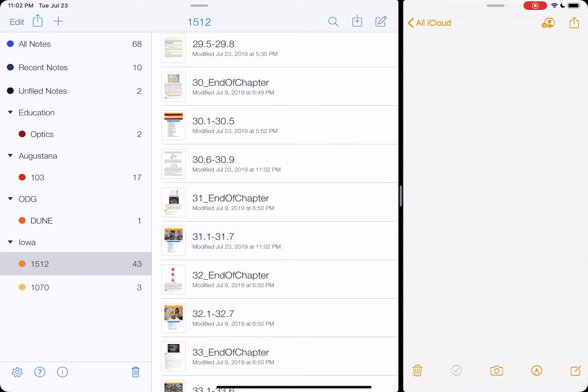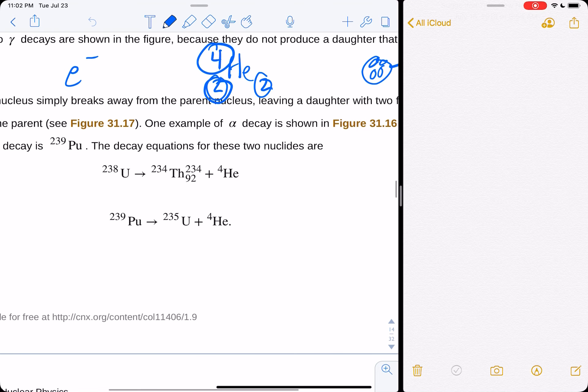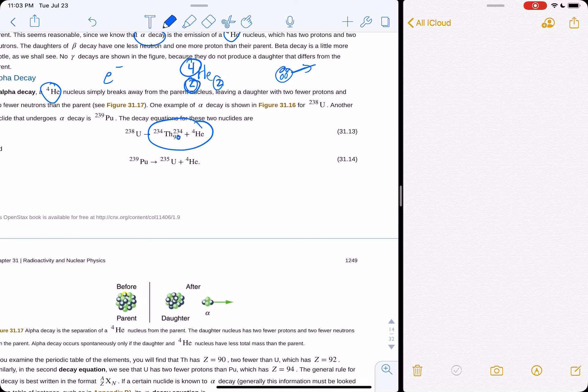So we're going from 238 uranium. We're gonna decay. We're gonna turn into thorium-234. I don't, I'm not sure what this is, what this notation is. 234 plus helium-4. So we've decayed now to thorium by emitting a helium-4 nucleus. And, yeah. Yeah, so that's all that is. So here's your parent before, after, it's a little bit lighter. You emitted an alpha particle, and it's, and it's decaying.